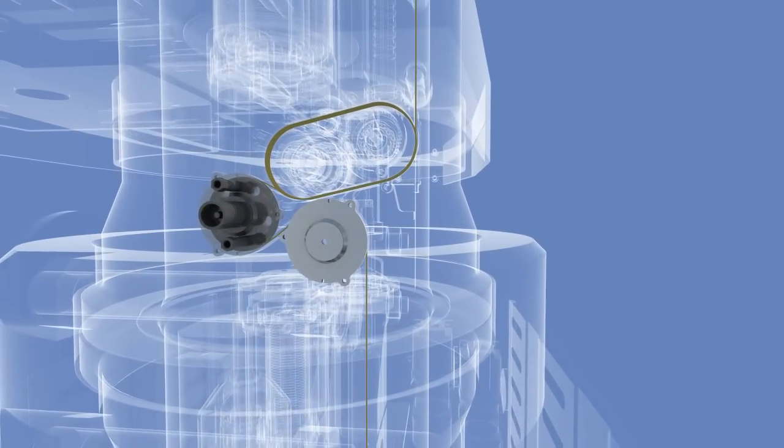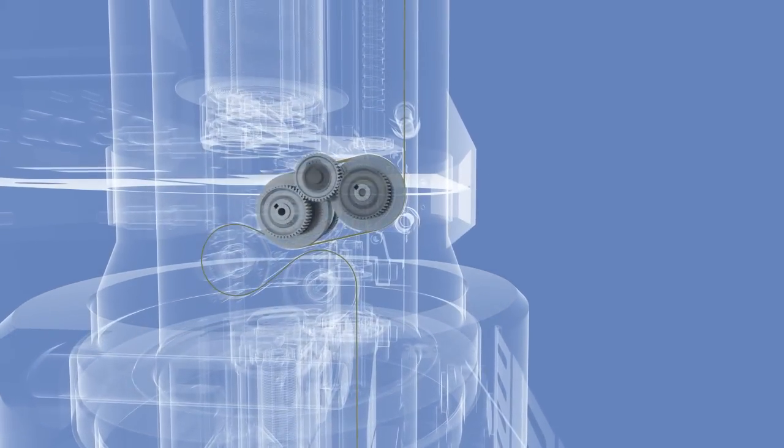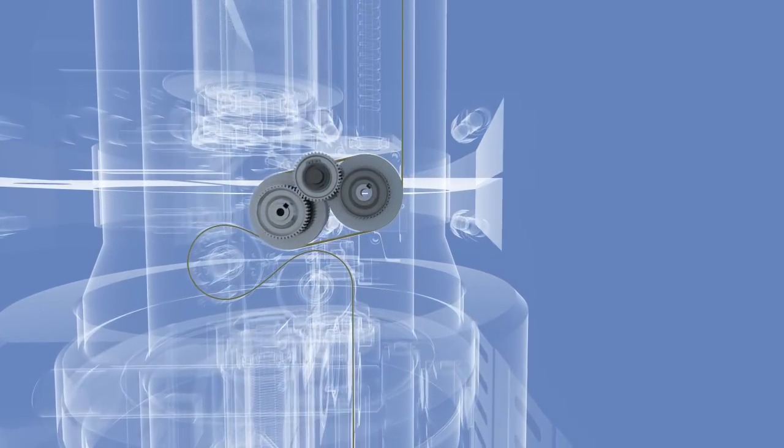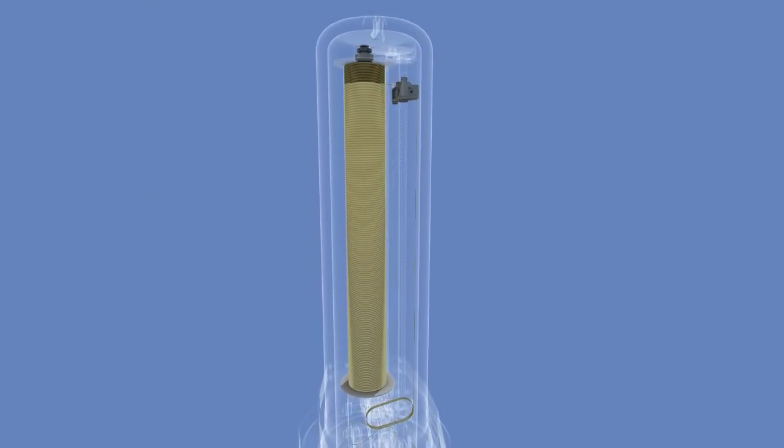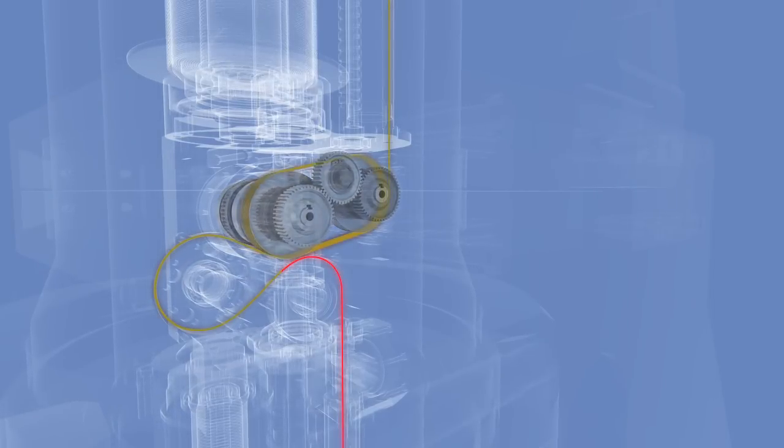The rope runs over a guide wheel and a measurement wheel before it reaches the capstan. It then continues from the capstan to the drum where it is stored. The capstan holds the tension of the rope by the friction created over the two wheels.